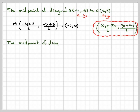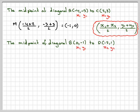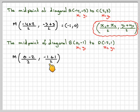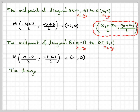Doing the same for diagonal BD, from B(0, −1) to D(−2, 1), putting in X1, Y1, X2, Y2, we get (0 + (−2))/2, (−1 + 1)/2 = −2/2, 0/2 = (−1, 0). These two midpoints are the same point, therefore the diagonals intercept at that same point, which is the midpoint along each diagonal.